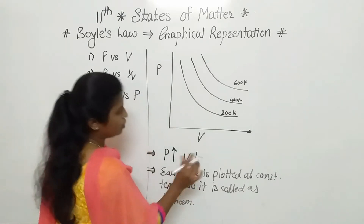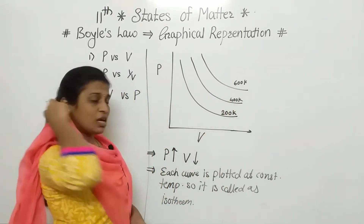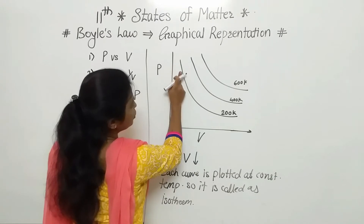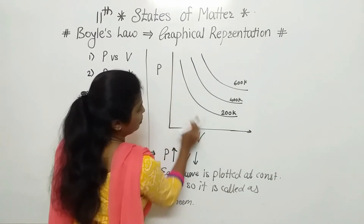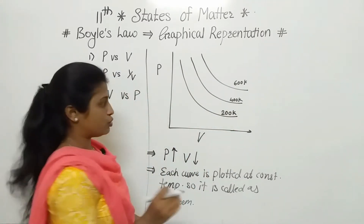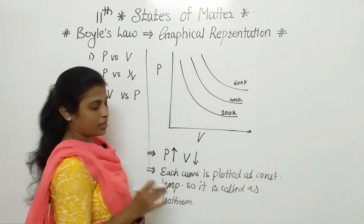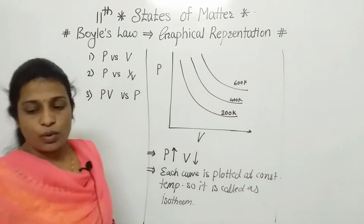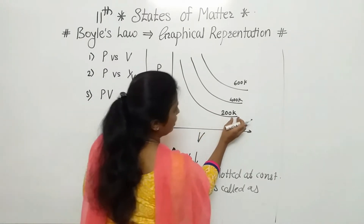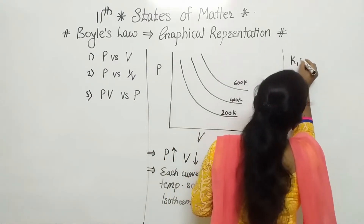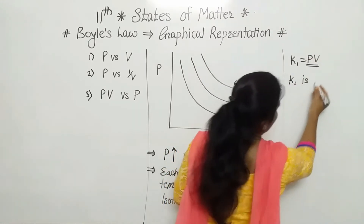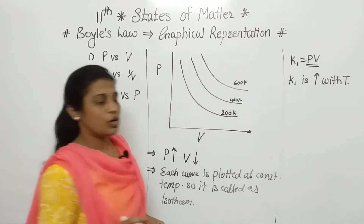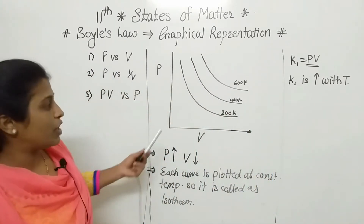We have drawn three isotherms. The first one is at 200 Kelvin — if pressure is 1 then volume is a certain value, if pressure is 2 or 3 the volume will be different, but temperature remains constant at 200 Kelvin. Another conclusion from this graph: PV is constant, K1 = PV, and K1 increases with temperature, meaning as temperature increases, that constant also increases.